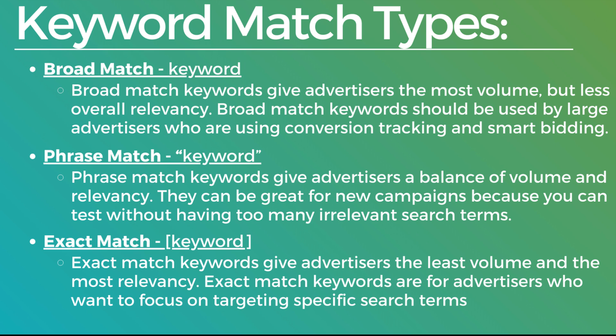Today I'm going to be going over keyword match types in Google Ads. There are three different keyword match types that you can use when you're running search campaigns: number one is broad match, number two is phrase match, and number three is exact match.